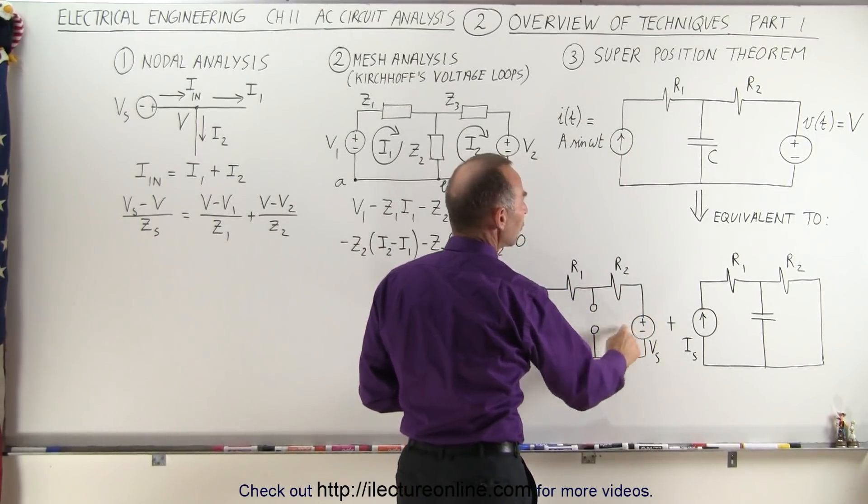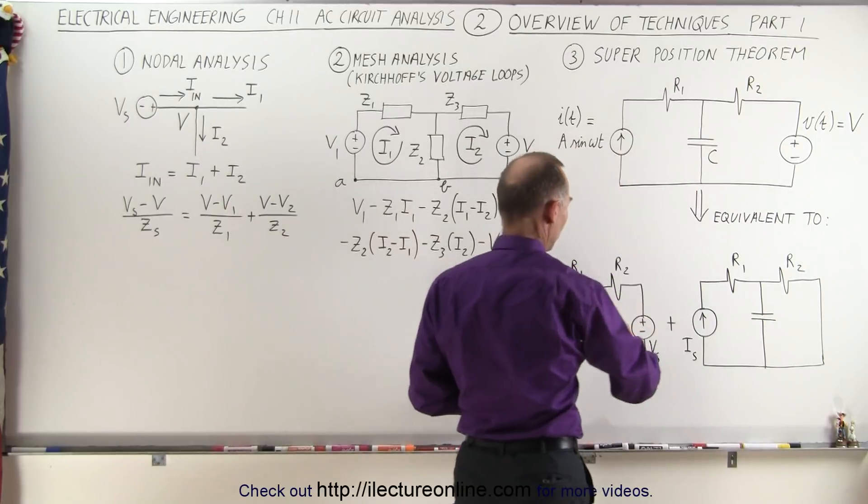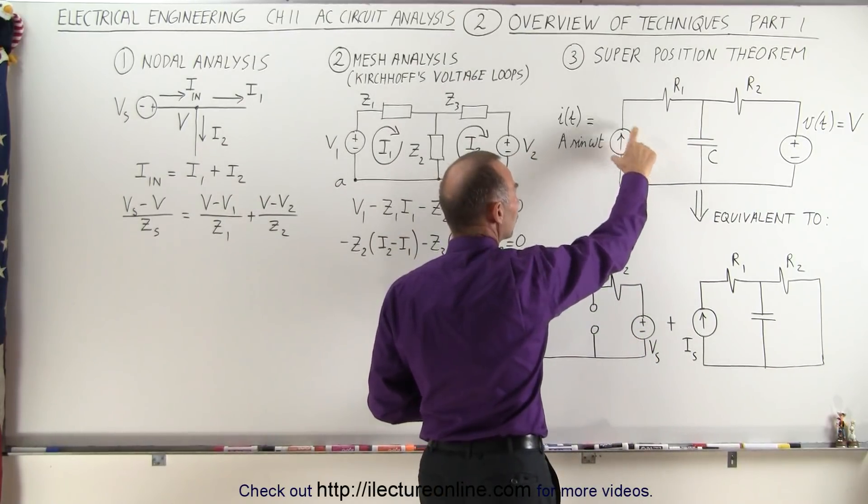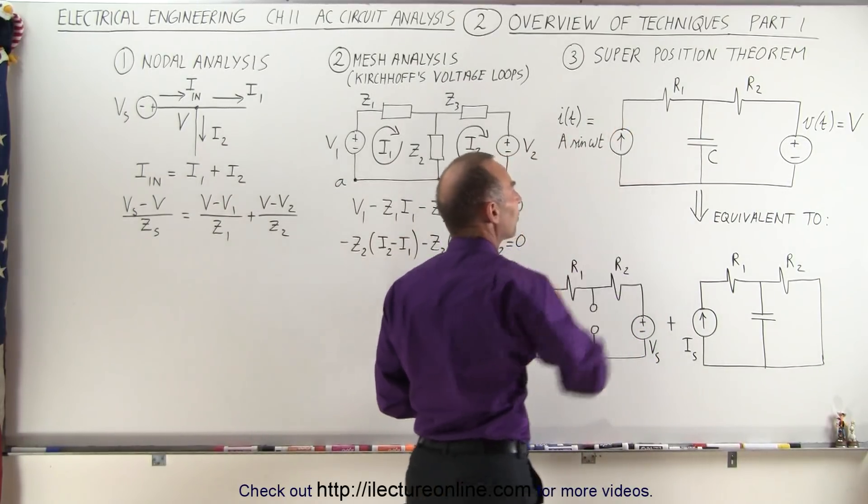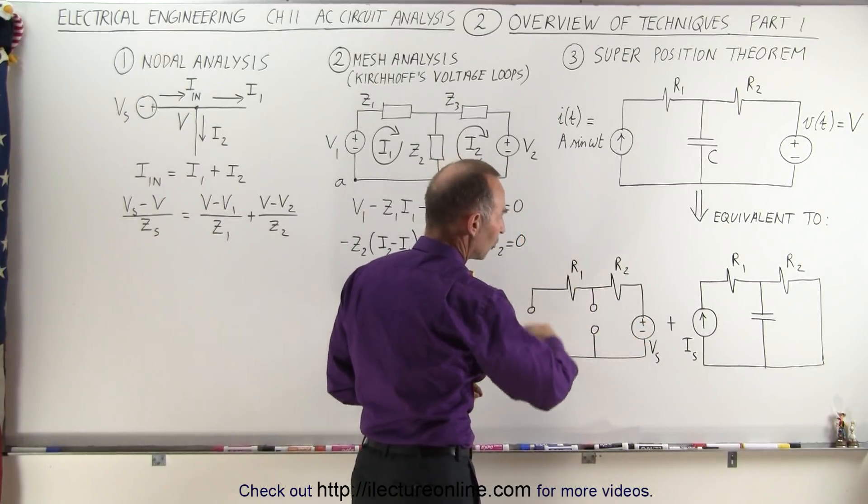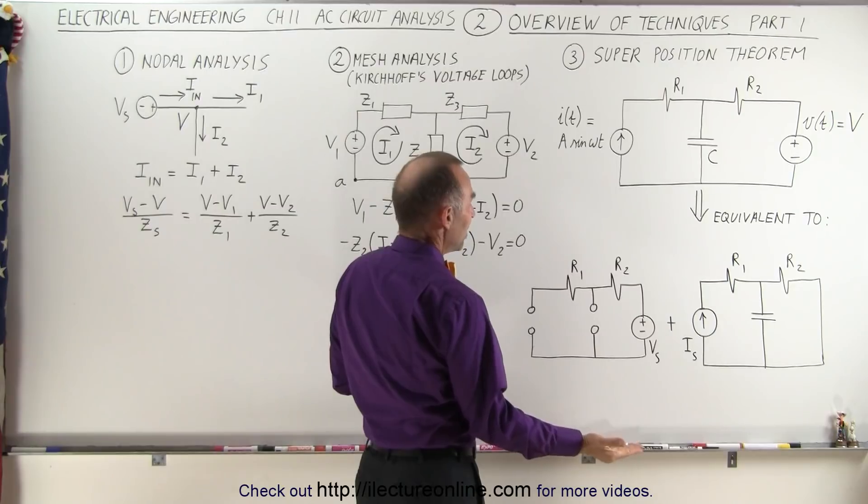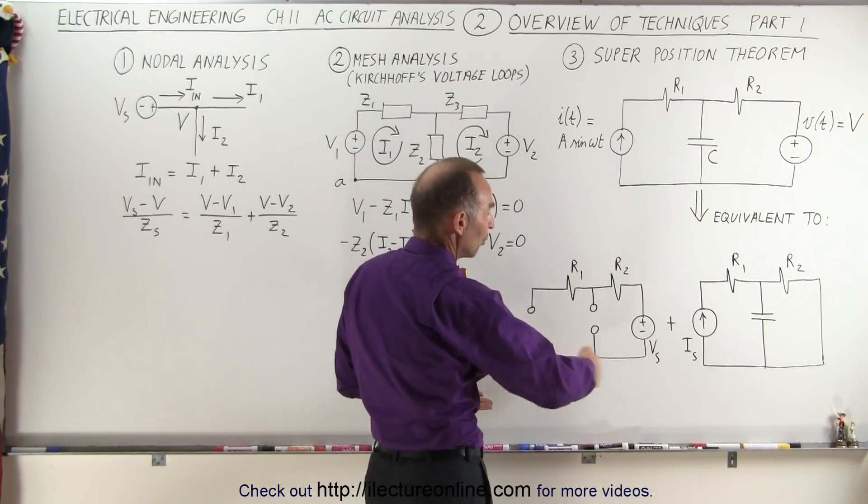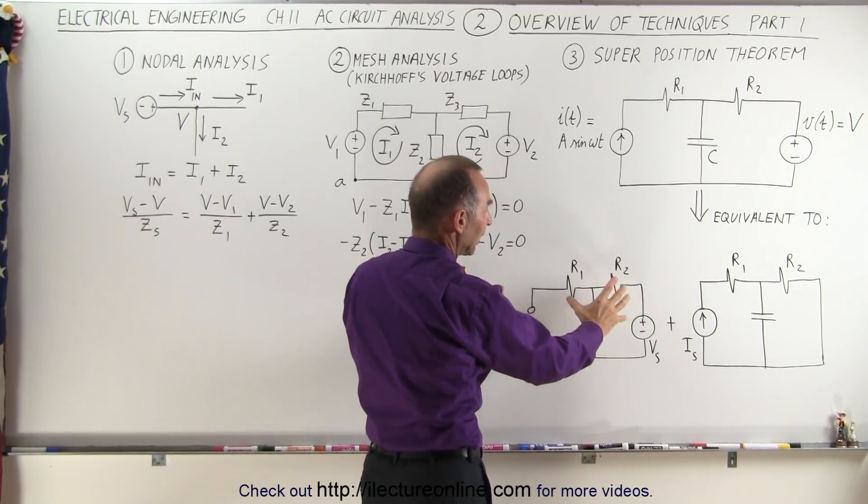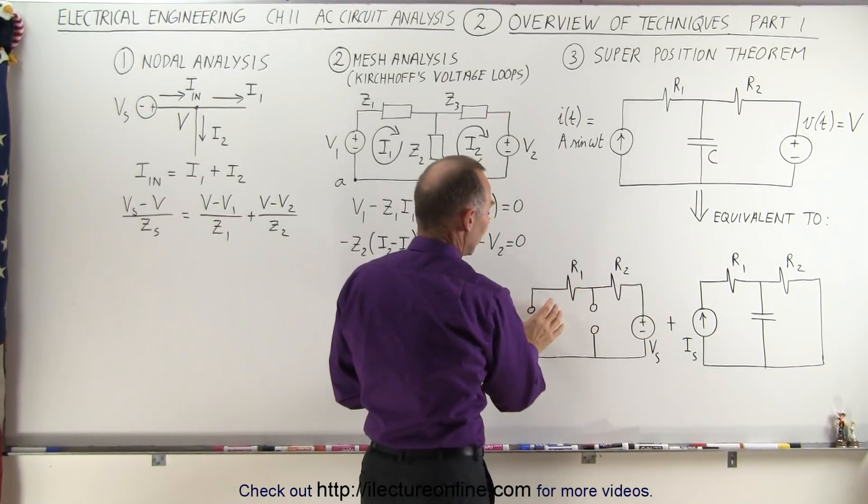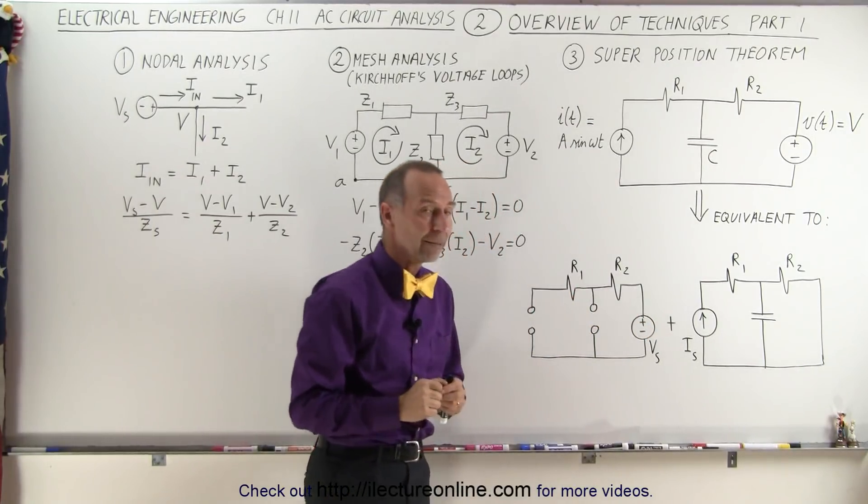Now, if we only have a DC voltage, a capacitor becomes like an open circuit and a current source also becomes like an open circuit. This is the circuit that we end up with, only the voltage source. Since there's no complete round circuit, we have no current flowing in this circuit when we only have the DC voltage and the current source is gone.